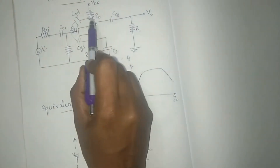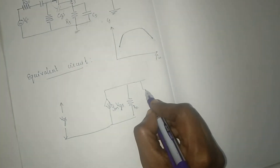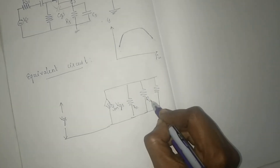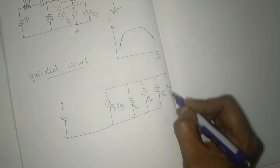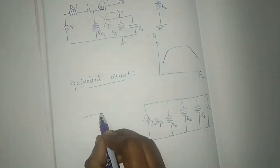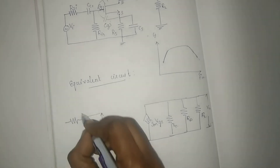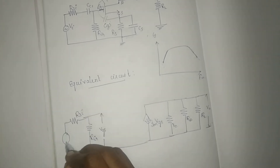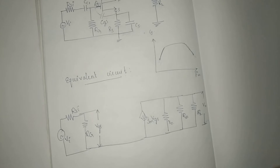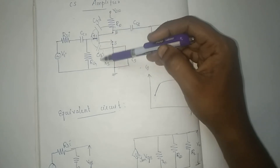On the output side we have RD resistance in parallel with RL resistance. On the input side we have RG resistance and RSI resistance, along with the input voltage source. Now we need to draw the high frequency equivalent circuit considering the two capacitors CGS and CGD.